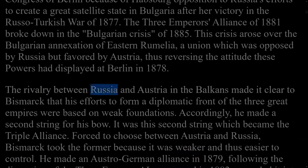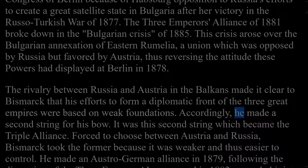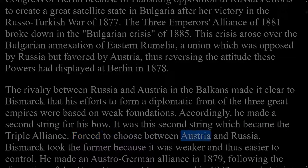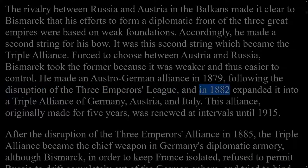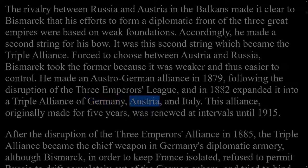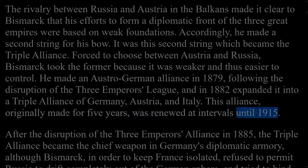The rivalry between Russia and Austria in the Balkans made it clear to Bismarck that his efforts to form a diplomatic front of the three great empires were based on weak foundations. Accordingly, he made a second string for his bow — the Triple Alliance. Forced to choose between Austria and Russia, Bismarck took Austria because it was weaker and easier to control. He made an Austro-German alliance in 1879 and in 1882 expanded it into a Triple Alliance of Germany, Austria, and Italy. This alliance, originally made for five years, was renewed at intervals until 1915.